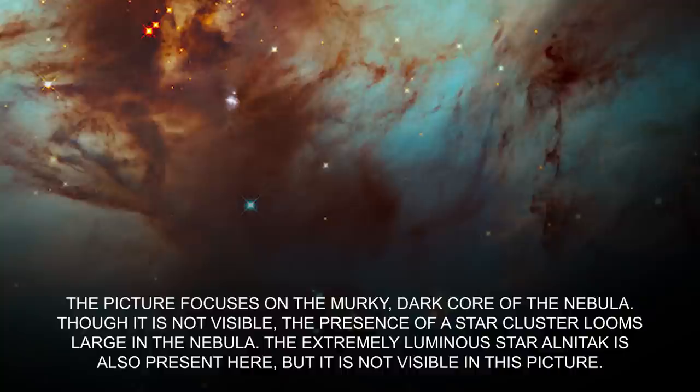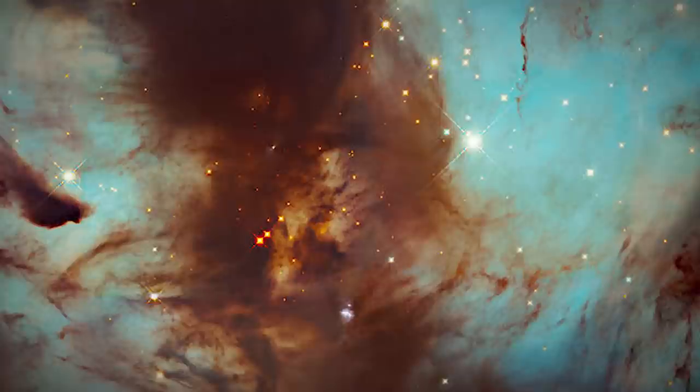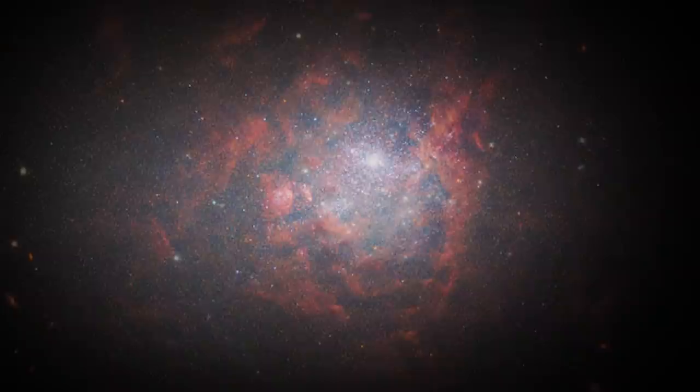The extremely luminous star, Alnitak, is also present here, but it is not visible in this picture. The radiation of Alnitak makes the hydrogen gas of the nebula ionize fast, and that is the very reason why you get to see a bright glow coming from the swirls of dust.